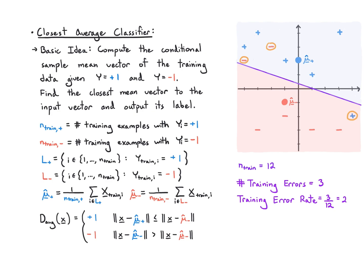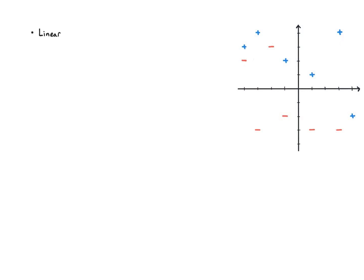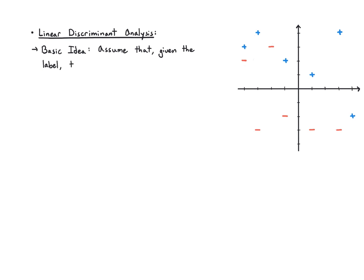In this example, the closest average classifier makes three training mistakes, giving a training error rate of 3/12 = 25%. On the eight test points it makes two errors, giving a test error rate of 2/8 = 25%.